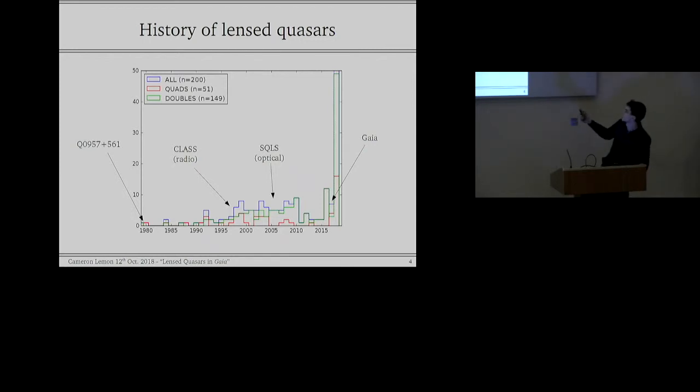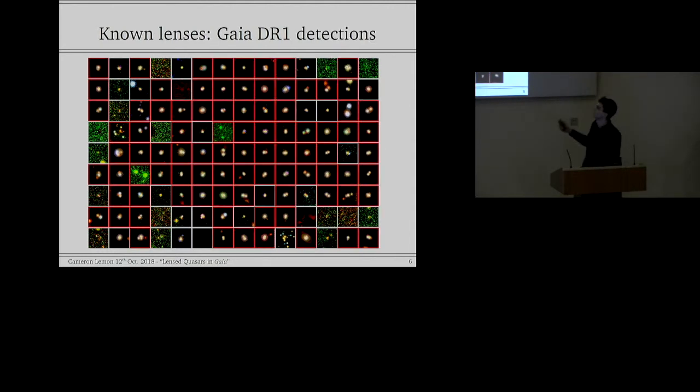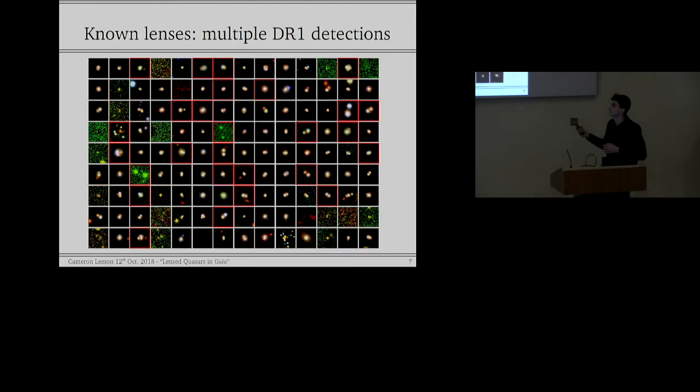So what do those 128 lensed quasars look like from before Gaia? Many of them aren't very bright in the optical because they were radio sources. So up here, you can see the twin quasar. You see two blue quasar images separated by six arc seconds. And perhaps you can also see the lensing galaxy kind of manifesting itself as this orange guy here. So we can ask what happened in Gaia DR1 with the detection of these lensed quasars. And 89 of the 128 had detections in Gaia DR1. But if we're going to use Gaia to actually find new lensed quasars, what we really want to know is when does it detect multiple images of lensed quasars, where in the optical it might not necessarily be obvious that we're seeing multiple images of a lensed quasar. And only 27 of these lensed quasars had multiple detections in Gaia DR1.